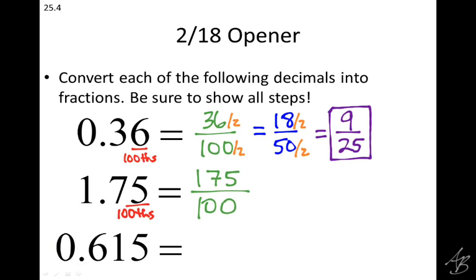Can I reduce this one by two? No. Why not? Because the top number is not divisible by two - the top number is odd, so we can't divide that by two. Can I reduce by five? Yes, so we'll reduce by five. 175 divided by five is 35, and 100 divided by five is 20. Am I done?